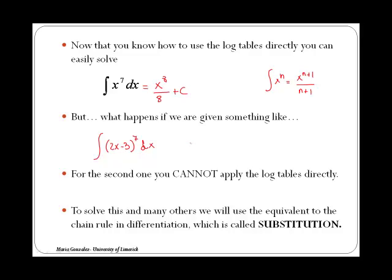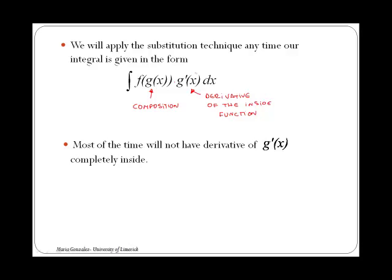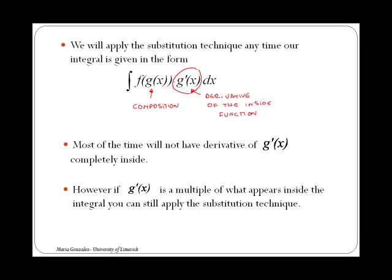You can see substitution as the integration version of the chain rule. We will apply the substitution technique anytime our integral is given in the form f of g, times g prime. Anytime you have a function inside a function — that is the composition between two functions — we need the derivative of the inside function. Most of the time we won't have the full derivative of g inside; however, if the derivative of g is a multiple of what appears inside the integral, you can still apply the substitution technique.